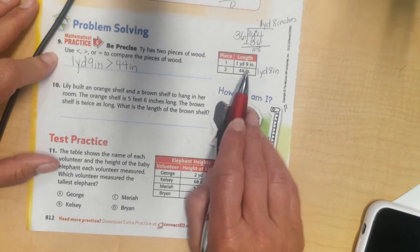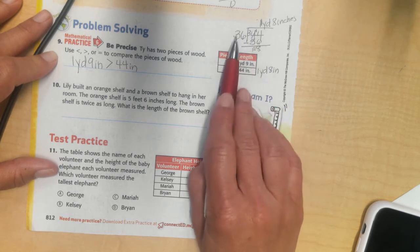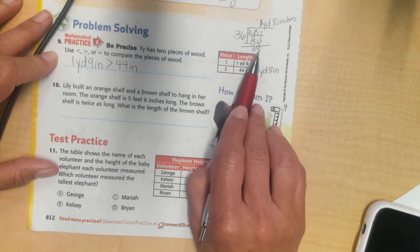To do that, I know there's 36 inches in one yard, so I took 44 and divided it by 36. I got 1 times 36, I subtracted, I had a remainder of 8.